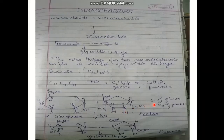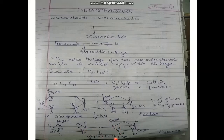There is a linkage between the C1 carbon of glucose and the C2 carbon of fructose. They combine together and a water molecule is eliminated, giving an oxygen linkage between carbon 1 and carbon 2. This oxide linkage between the two monosaccharide units is known as glycosidic linkage, and this is how sucrose is formed — from glucose and fructose joined by loss of water.